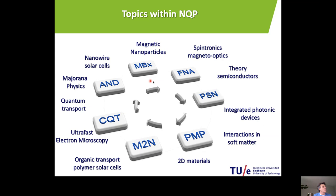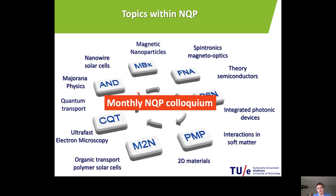In this track, we have these groups available, and around them you can see the possible topics covered: spintronics theory, integrated photonic devices, soft matter, 2D materials, organic transport, ultra-fast electron microscopy, quantum transport, Majorana physics, and nanowire solar cells. There are many interactions between these groups already, and in addition we have our monthly colloquium with speakers from different groups to stimulate discussions and interactions.